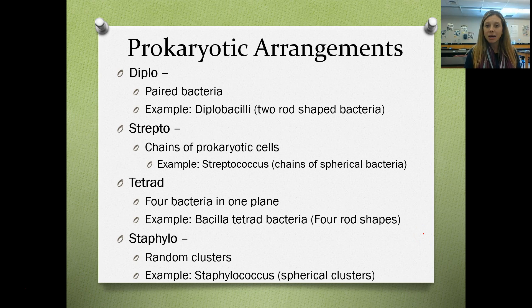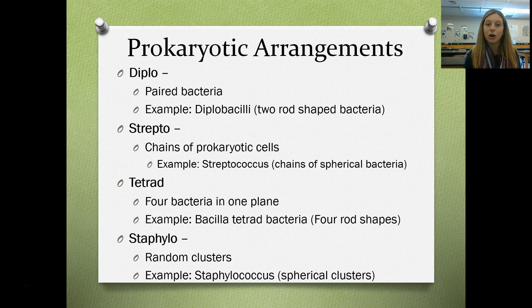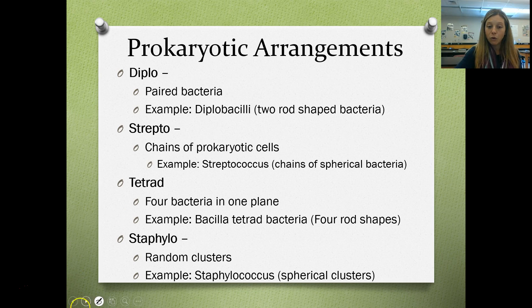Some bacteria arrange in very specific ways with specific prefixes. The prefix diplo means paired, so diplobacilli are pairs of rod-shaped bacteria. Strepto means chain — streptococcus, the bacteria causing strep throat, is a chain of spherical bacteria. A tetrad is a group of four bacteria in a single plane, so a bacilli tetrad would be four rod-shaped bacteria. Staphylo means a random cluster of cells — staphylococcus, which causes staph infections, is spherical clusters.